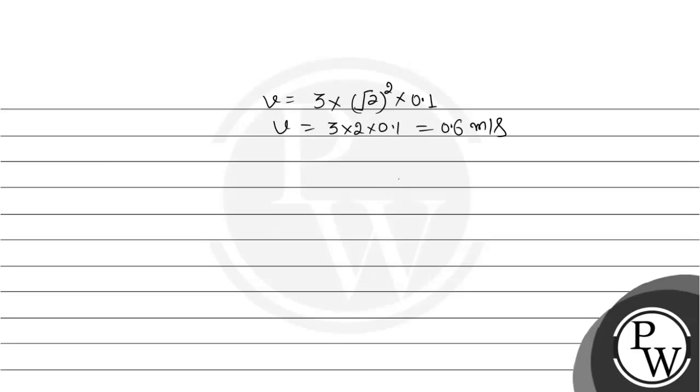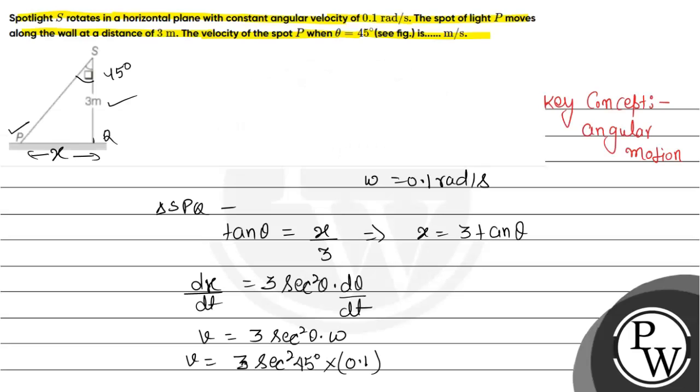So from the given question, we can say the velocity of the spot P when theta equals 45 degrees is 0.6 meters per second. Hope you understood it. Thank you and best of luck.